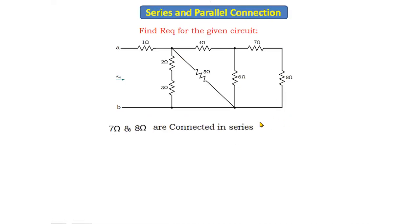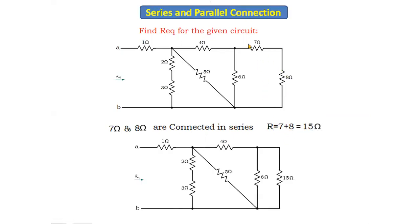In the first step, the 7 ohm and 8 ohm resistors are connected in series. The current is not dividing in these two resistors; the current is the same. Using the series formula R = R1 + R2, we get 7 + 8 = 15 ohms. We convert these two resistors into one single resistor of 15 ohms.